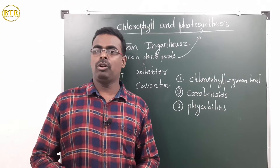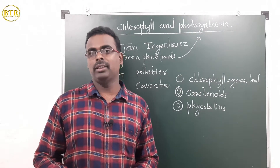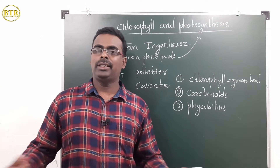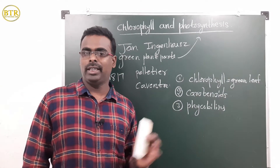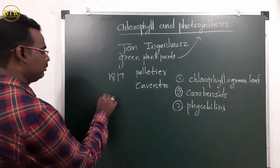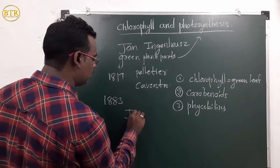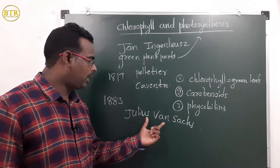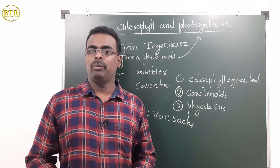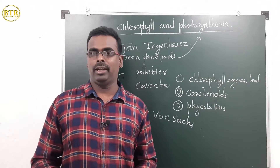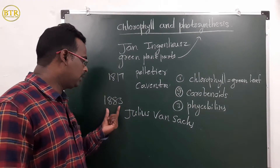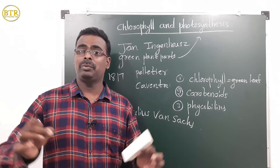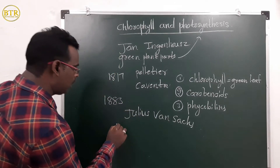Now, what about the location of chlorophyll — where do you find the chlorophyll in your plant cell? Six decades after Caventou and Pelletier, in 1883, Julius van Sachs found that chlorophyll is present in a special cell organelle in the plant cell, and he called that cell organelle the chloroplast.